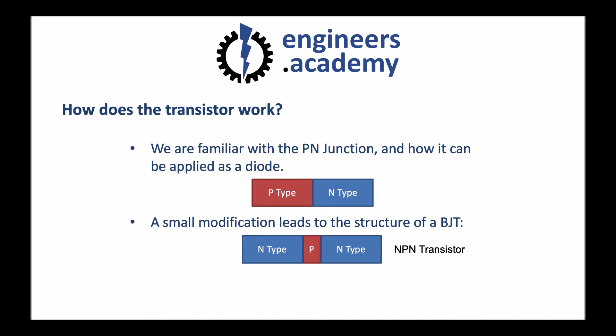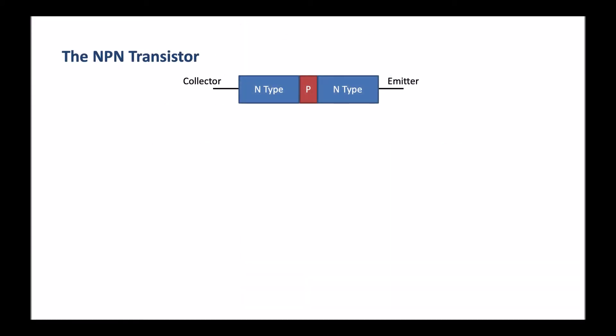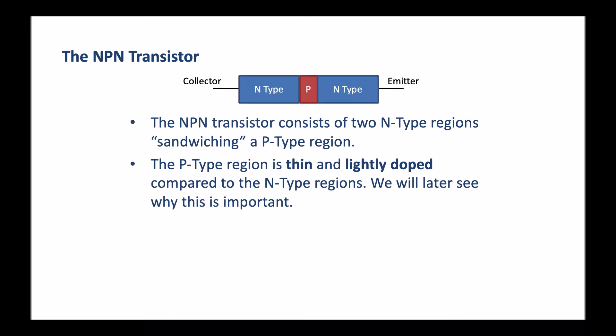Here's an example of the structure of what's called an NPN transistor, because the layers are N-type, P-type, and N-type. Likewise, it's also possible to construct a PNP transistor of P-type, N-type, and P-type doped material. In this particular video, we'll focus on the NPN type. The NPN transistor consists of two N-type regions sandwiching a P-type region. The P-type region is thin and lightly doped compared to the N-type regions.